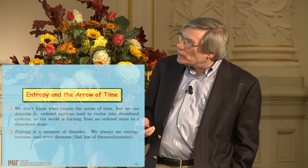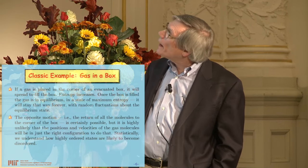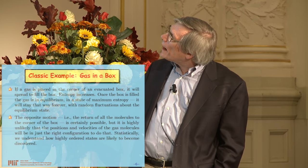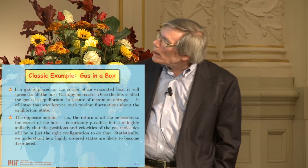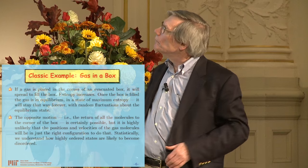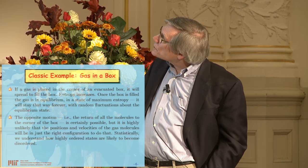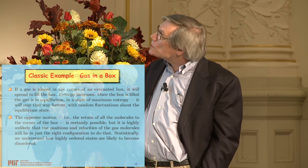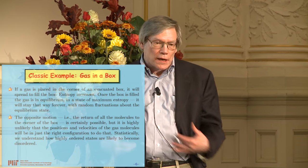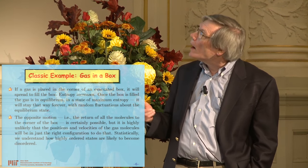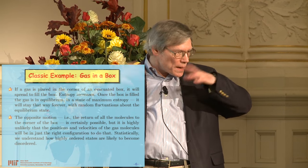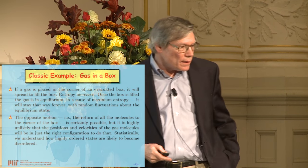We understand that if you start with a low entropy state, it will naturally evolve into a high entropy state. The classic example is a gas in a box — you can imagine placing a gas in the corner of an otherwise evacuated box, and it will naturally spread to fill out the box. In doing so, it goes from a low entropy state to a high entropy state. Once it fills the box and reaches equilibrium, the gas stays in that equilibrium state with small random fluctuations, but always basically being in this equilibrium state.